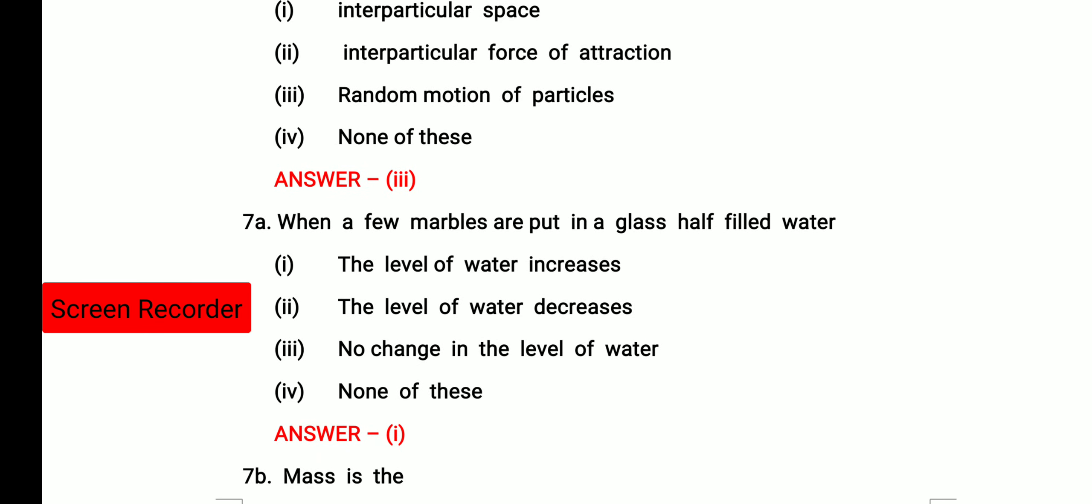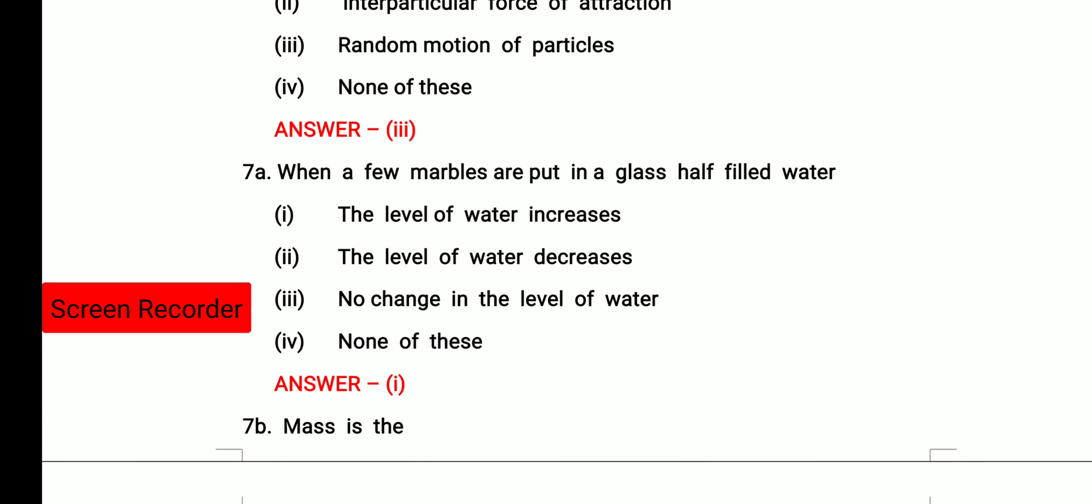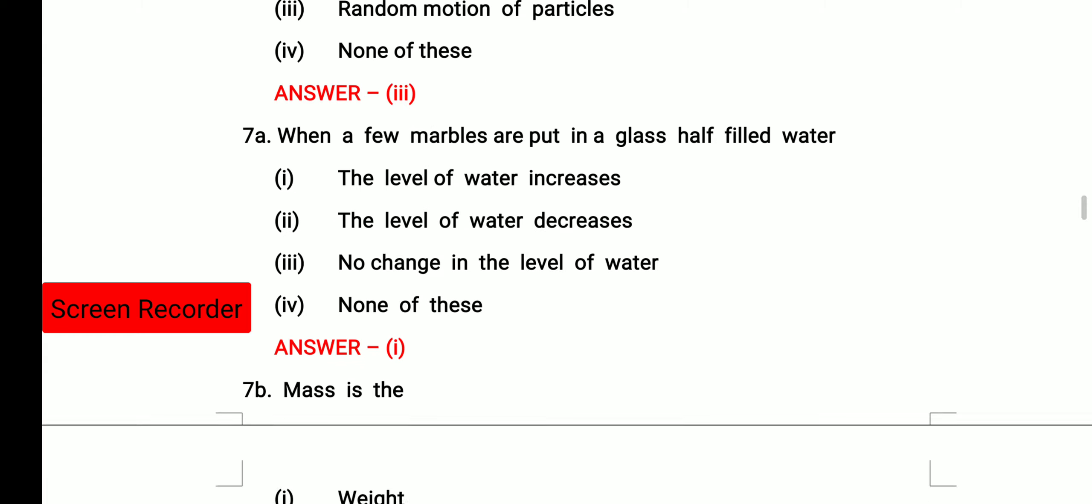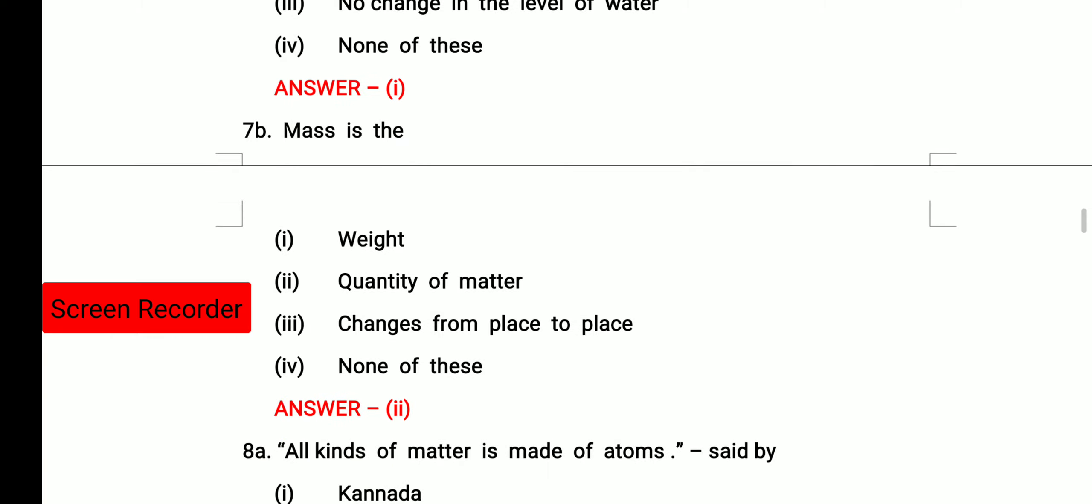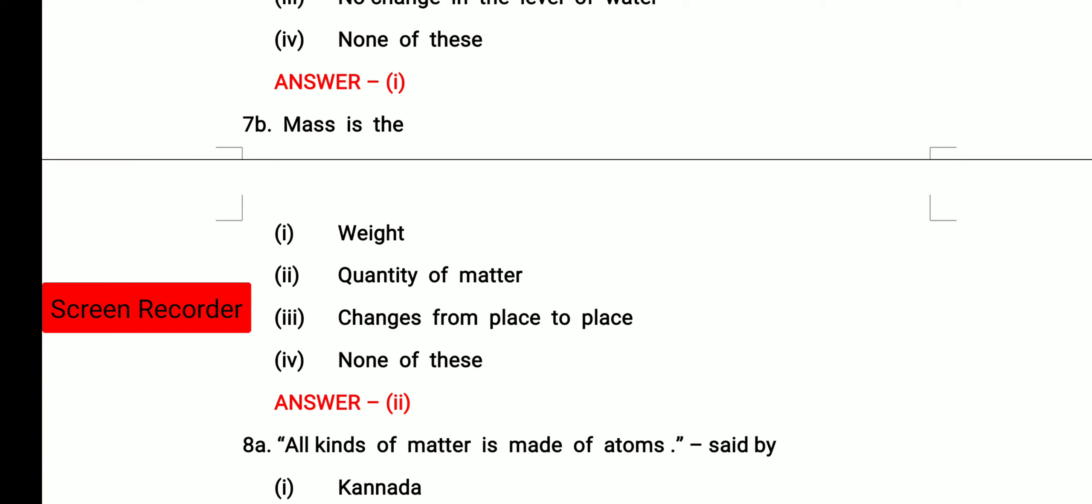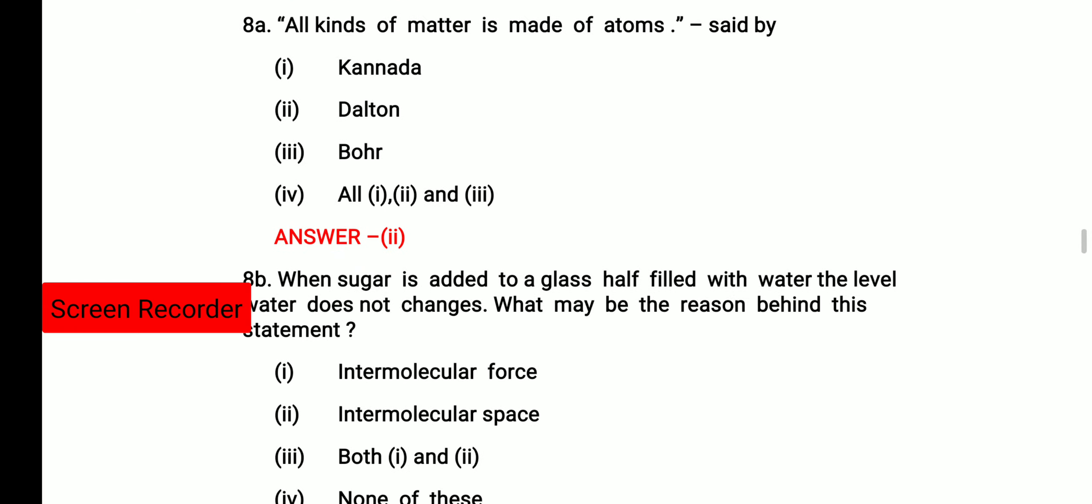Then the next question was, when a few marbles are put in a glass, half filled with water, what will happen? The level of water will increase because marbles will occupy their own space and that will displace the water. Then mass is the weight, quantity of matter changes from place to place, none of these. So mass is the quantity of matter. Option 2 is correct. All kinds of matter is made up of atoms. It is said by Dalton.